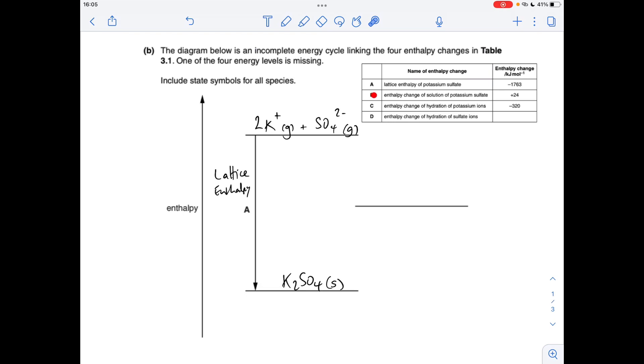The step that's missing is the enthalpy change of solution of the potassium sulfate. You'll notice it's endothermic so it needs to come up, so we're going to draw a line about there, and on that we're going to have the aqueous ions.